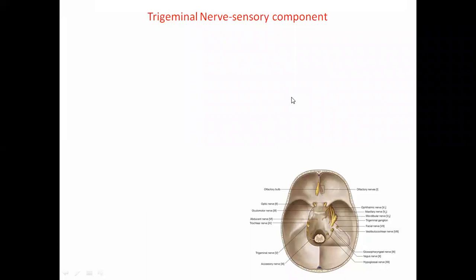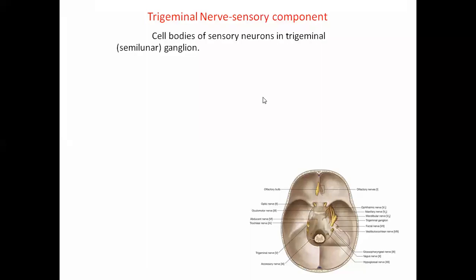The sensory component can be seen in the diagram. After leaving the pons, the trigeminal nerve divides into three divisions: ophthalmic, maxillary, and mandibular. These three divisions are majorly sensory but also carry some motor component. At the point of trifurcation, there is an enlargement called the trigeminal ganglion.